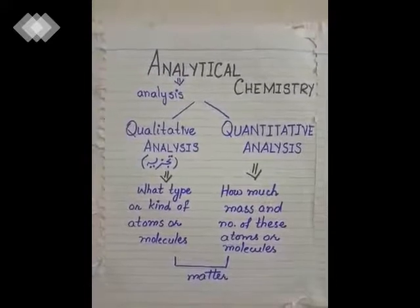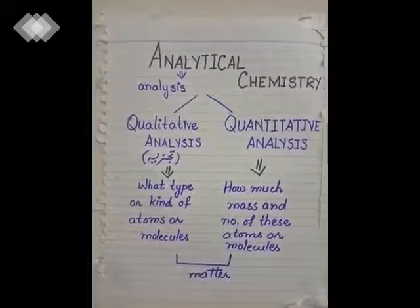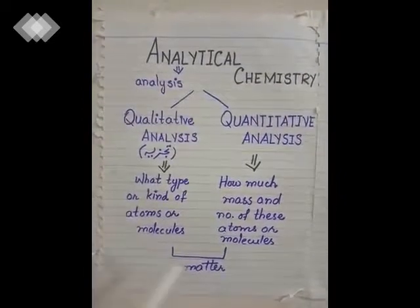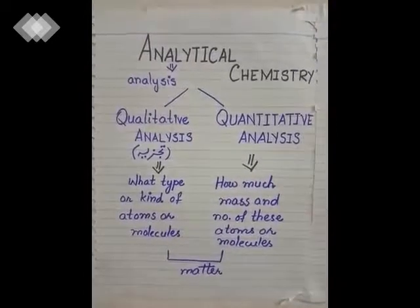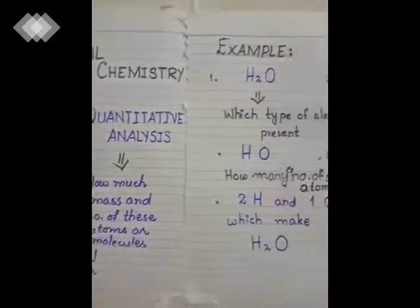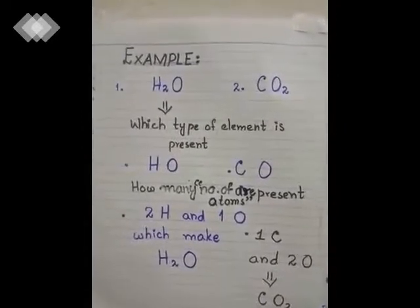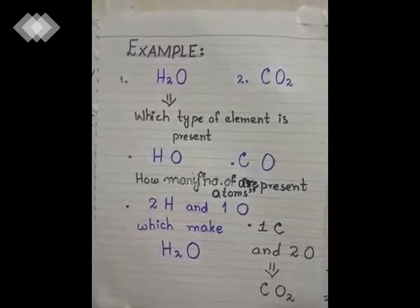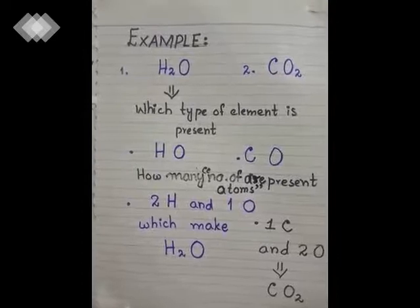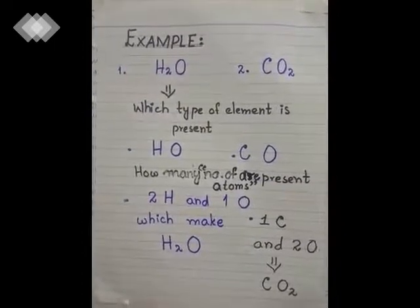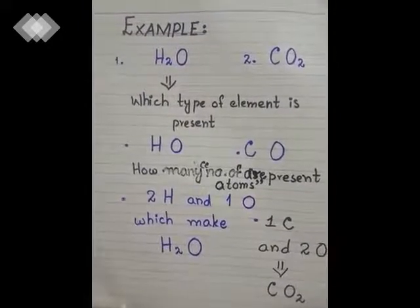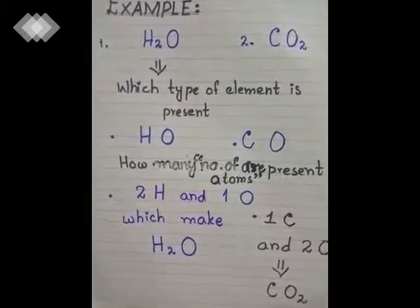In analytical chemistry we study two types of analysis: qualitative analysis and quantitative analysis. Qualitative analysis tells us what type or kind of atoms or molecules are present in matter. Quantitative analysis tells us how much mass and number of these atoms or molecules are present in matter. For example, water is made up of hydrogen and oxygen — that is qualitative analysis. Two atoms of hydrogen and one atom of oxygen are present in water — that is quantitative analysis because it shows the number of atoms present.